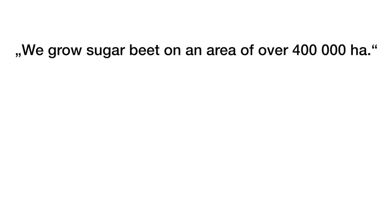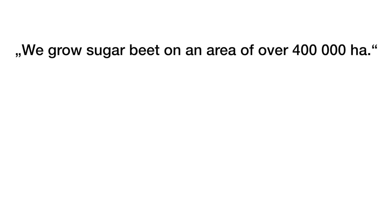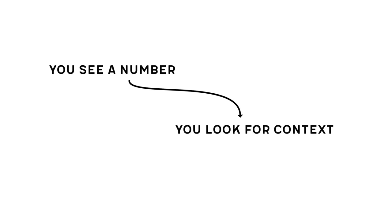Whenever you see a big number, you should look for context. When you read statements like 'we grow sugar beet on an area of over 400,000 hectare,' you should immediately ask yourself: who is 'we'? Is it Germany? Europe? The world? What is the time frame? Is that per year? Is that a lot? How much is that compared to other crops? Context matters a lot, and often big numbers are used to impress you. In this case, 400,000 hectare is the yearly area that Germany grows sugar beet on. Wheat, for example, is grown on over 3 million hectare per year in Germany. Context matters — whenever you see a number, look for a frame of reference. If the article doesn't give you one, either go look for yourself or ignore the number for your decision-making.